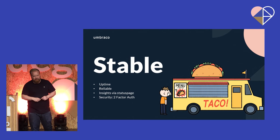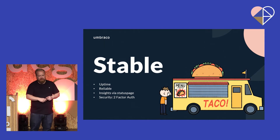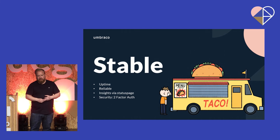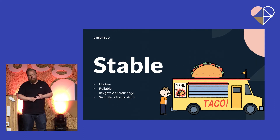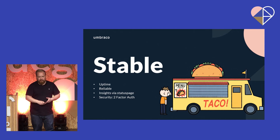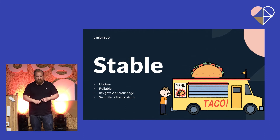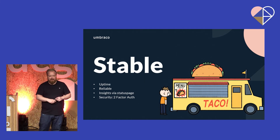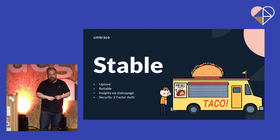Going back to the guiding principles about being stable as a managed service — it's super important to have a stable API that you can count on always being up and always being reliable. What we want to do with Heartcore is to be really open about what you can expect in terms of performance and reliability. One of the things we're going to work on in the near future is pushing this into our status page — we have one for Umbraco Cloud showing scheduled maintenance, degraded performance, and so forth. This is also a place where we can put performance targets, showing what you can expect from the REST API and GraphQL API in terms of uptime, because we believe we can provide a service that is stable and reliable always.